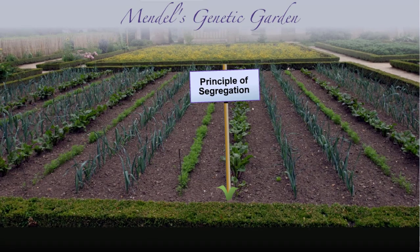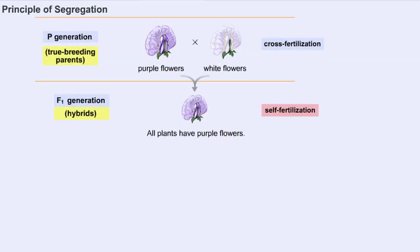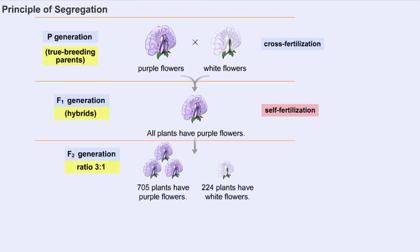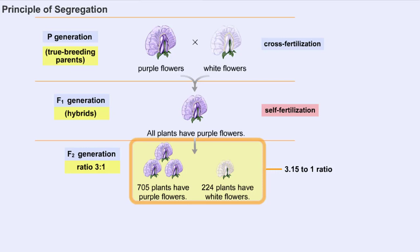The seeds from the F1 hybrid progeny were collected and the following year planted in the garden, where they naturally underwent self-fertilization. Mendel was surprised to find that the white flower trait reappeared in the F2 progeny, but in significantly lower numbers than the dominant purple flower trait. He counted 705 purple flower progeny and 224 white flower progeny, a ratio of 3.15 to 1. Mendel obtained similar ratios for the other six characteristics he tested, and this 3 to 1 ratio is referred to as the Mendelian Ratio.